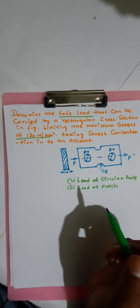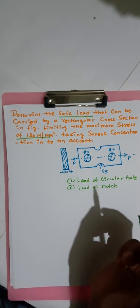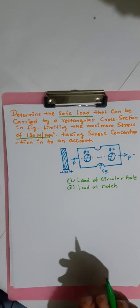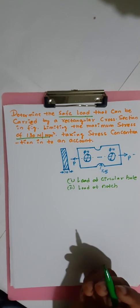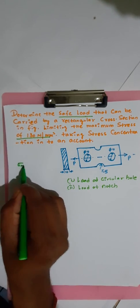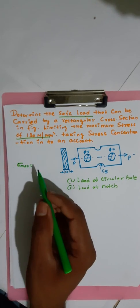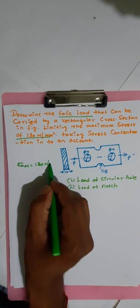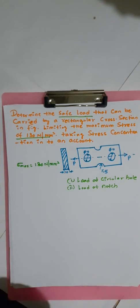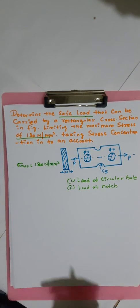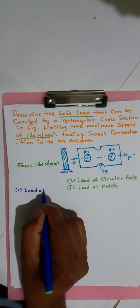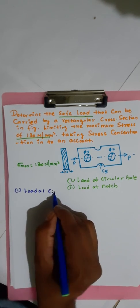Before going further, let us note the given data. We have maximum stress: sigma_max = 130 newton per mm squared. Also, thickness of the plate is 10 mm. Now first, consider load at circular hole.